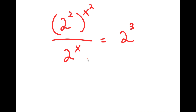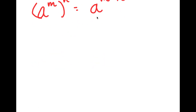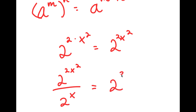Now, 2 squared to the power of x squared — I can use a property to simplify this. The property is that a to the power of m to the power of n equals a to the power of m times n. So 2 squared to the power of x squared can be rewritten as 2 to the power of 2 times x squared, giving me 2 to the power of 2x squared over 2 to the power of x is equal to 2 to the power of 3.